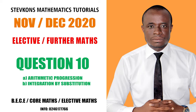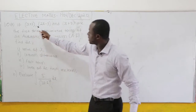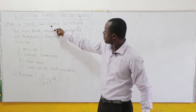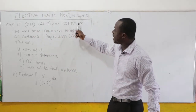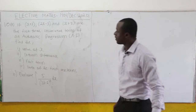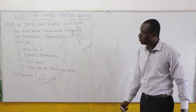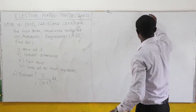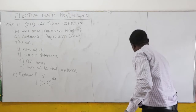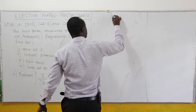NABDEC 2020, question number 10. It is saying that if x plus 3, 2x minus 3, and x plus 5 are the first three consecutive terms of an AP, we should find the value of x.